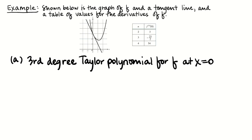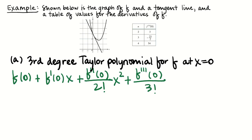Now let's work a free response example modeled off problem number 6 from the 2019 BC exam. We've got a graph of f, a line tangent to it at x equals 0, and a table of values for the derivatives of f at x equals 0. They're asking us to write the third degree Taylor polynomial for f around x equals 0. We'll need f and its first three derivatives at x equals 0, plug into the skeleton, and we'll have our third degree Taylor polynomial.